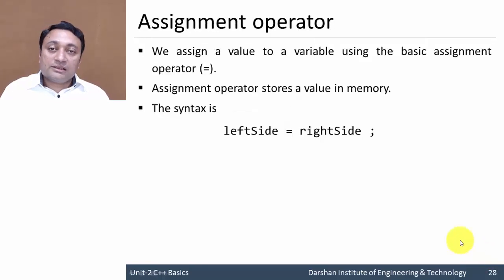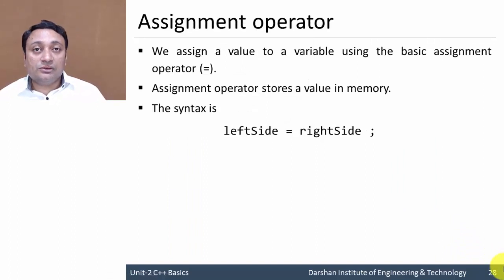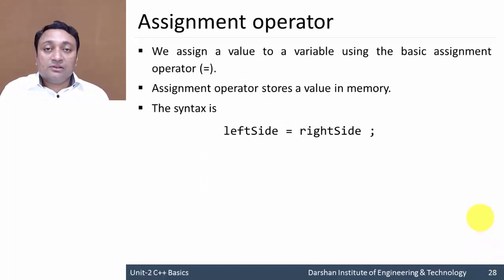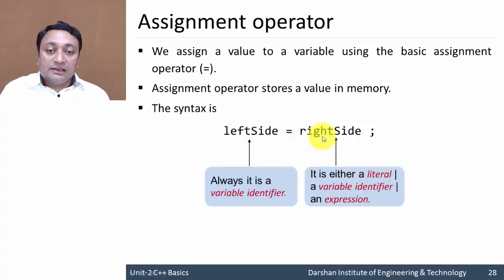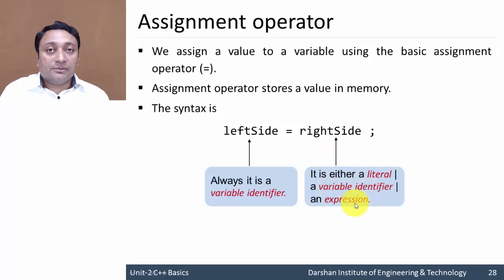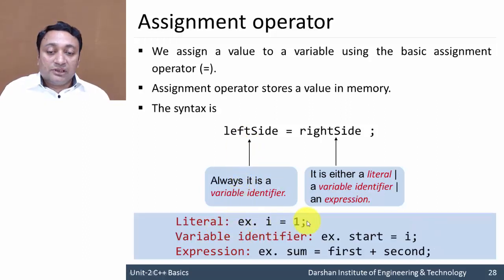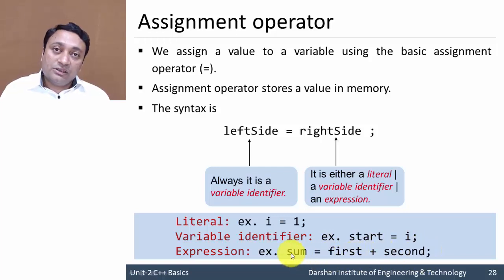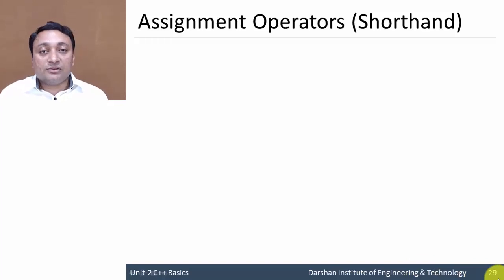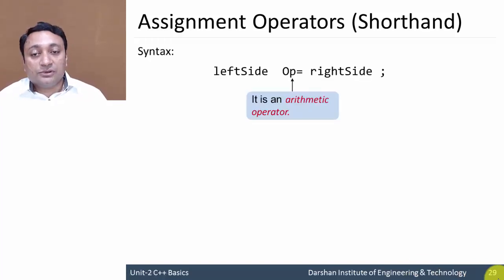Now let us discuss the assignment operator, which is used to assign a value to a variable and store that value in memory. Here is the syntax: on the right-hand side we write a literal, constant value, variable identifier, or any mathematical expression, while on the left-hand side it will always be a variable identifier.